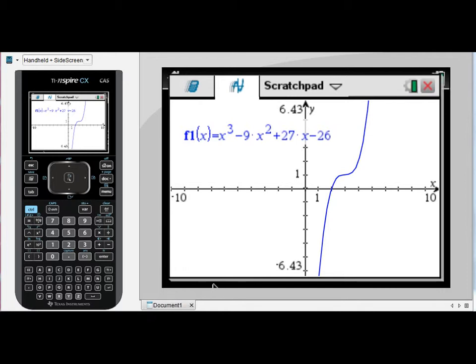It's fairly easy from simple calculation to work out that its y-intercept is occurring at negative 26, and so we just need to make a small adjustment to this window in order to be able to see that.